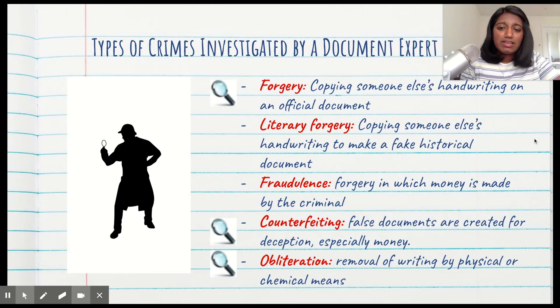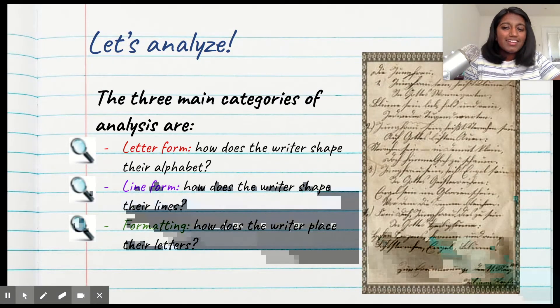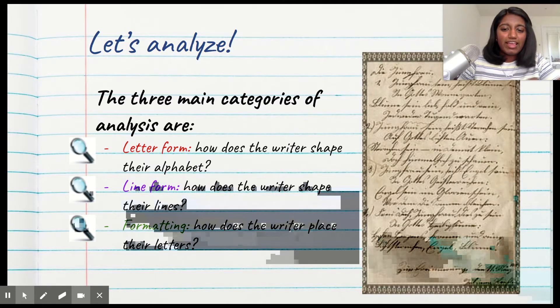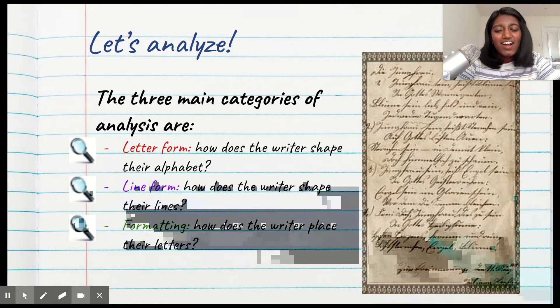So those are things that can be investigated by a document expert. Now, let's actually go through and analyze things. The three main categories of analysis used by handwriting analysts are letter form, line form, and formatting.